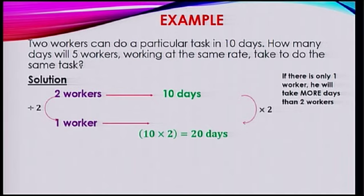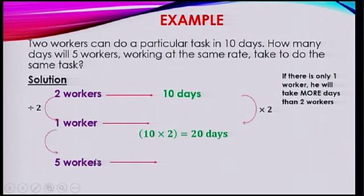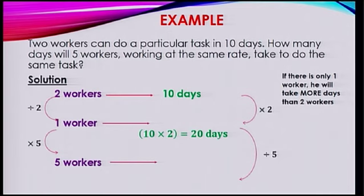You are asked how many days will 5 workers take. Well, 1 worker will take 20 days. To make it become 5, you need to multiply it by 5. So if you are multiplying one quantity by 5, you need to simply divide it by 5. So 5 workers will take 20 divided by 5, which is simply 4 days.